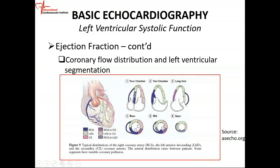When you move to the mid-cavity level, the anterior wall and septum are supplied by the LAD — left anterior descending coronary artery. The anterior lateral wall is the LAD or the left circumflex. The inferior lateral wall is probably the RCA or the circumflex. The inferior wall is the RCA, and the inferior septum is probably the RCA as well.